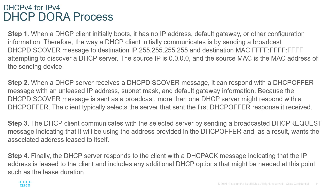The Discover message is broadcast out, so the destination IP address will be all 255s and the MAC address will be all F's — it's broadcast at both Layer 2 and Layer 3. The source IP address cannot be filled out so it's all zeros, because the device is requesting that information. However, the source MAC address will be the MAC address of the device sending the discovery message, because that's the only address the device knows it has at this point.